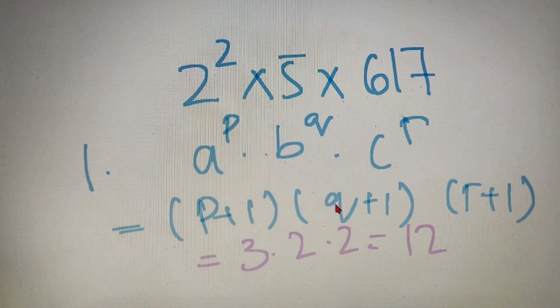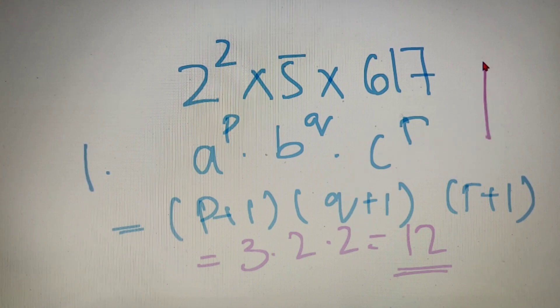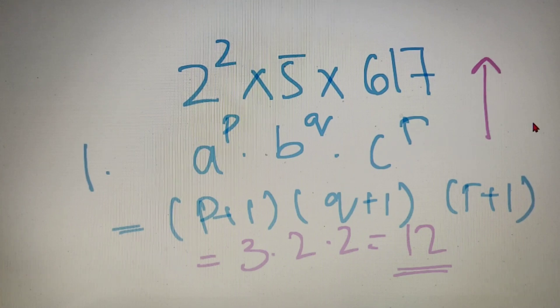So the number of factors of the number 12340 is equal to 12. Now if you have any doubt regarding this formula or the solution, then I have made a separate video on finding out the number of factors, so you can go check that out too.